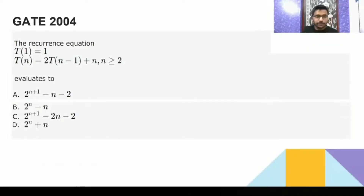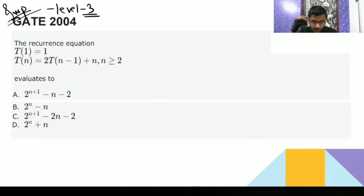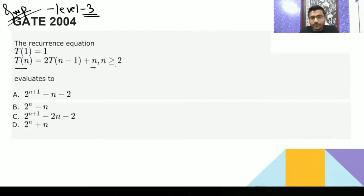This is one of the difficult and important recurrence questions — not all questions are easy. It is a level three question. Try it yourself first, then I will solve it. It is saying that T(n) = 2T(n-1) + n, when n is greater than or equal to 2.